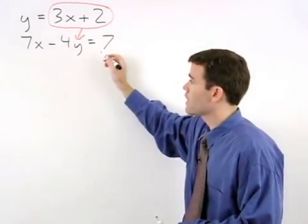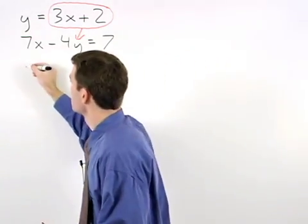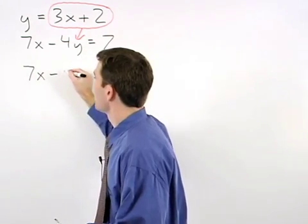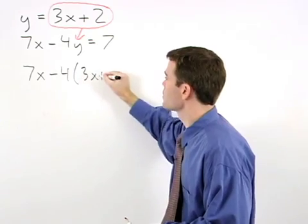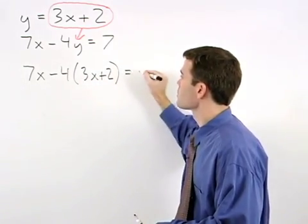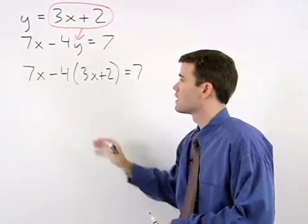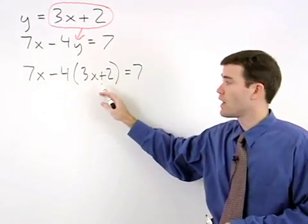Our second equation then becomes 7x minus 4 times parentheses 3x plus 2 equals 7. Now we can solve for x.